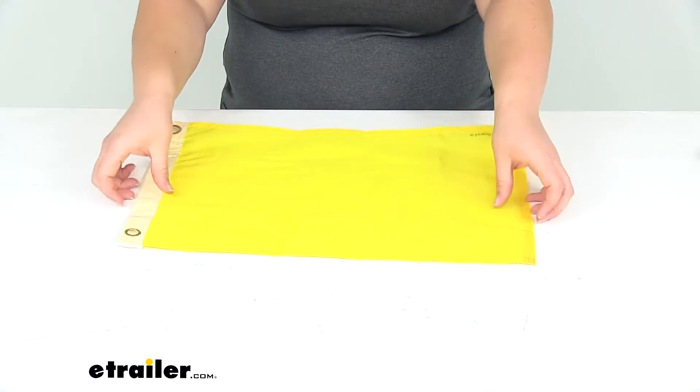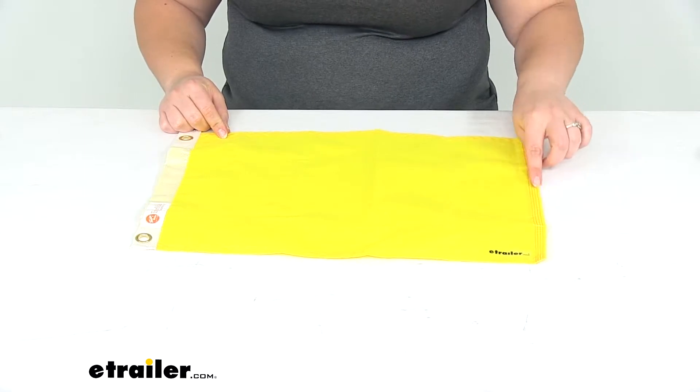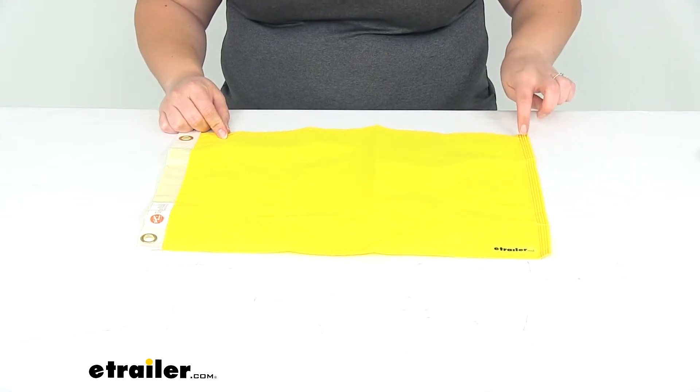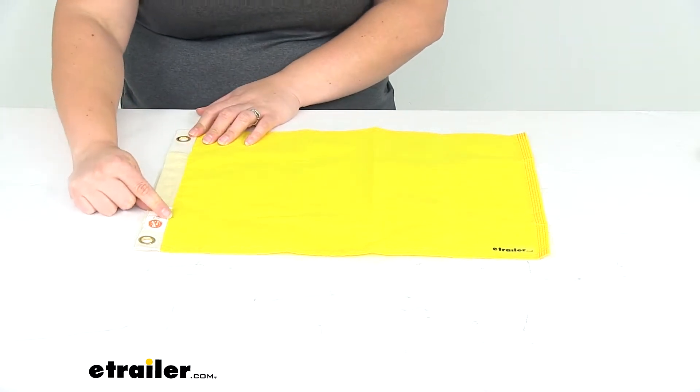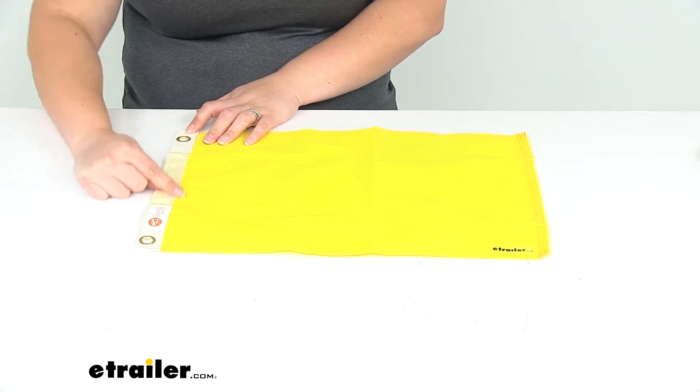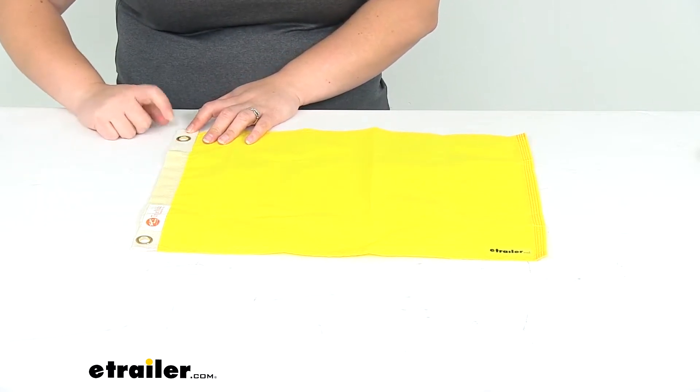So solid yellow flag, we'll have our reinforced stitching all the way around. The fly end has actually four stitches to help reduce any kind of fraying. We'll also have a reinforced piece here at the spine of the flag. Our brass grommets should resist any kind of rust or corrosion.